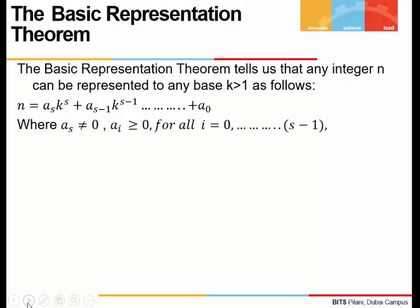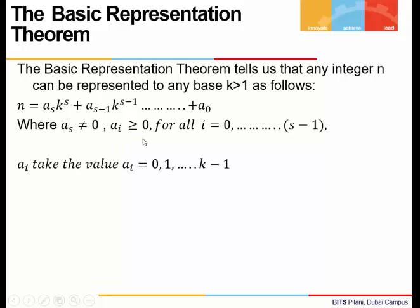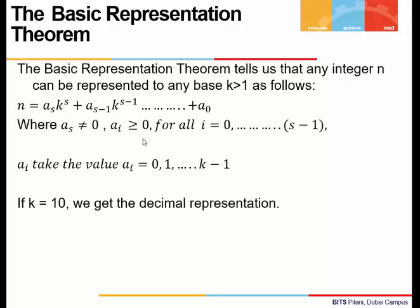A few things to remember: the coefficient of the highest power of the base should be non-zero, and all other coefficients are non-negative — they can be zero. The coefficients take values from 0 to k minus 1.